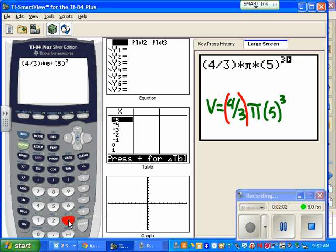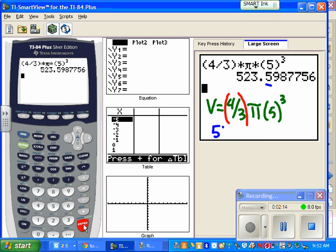So now it looks beautiful. I can hit enter, and I get my exact answer, rounding it to the nearest tenth place. In this case, I'm going to say 523.6.